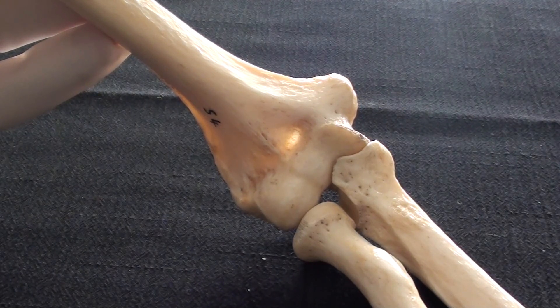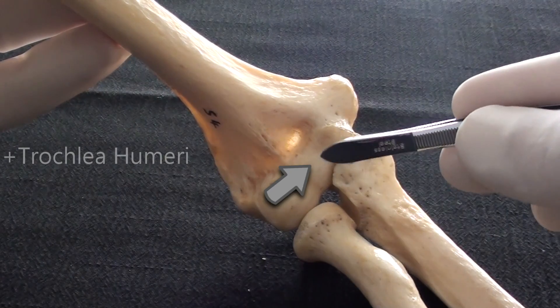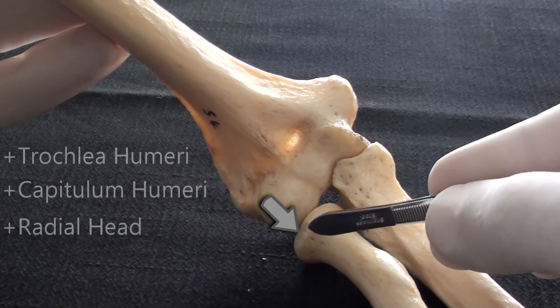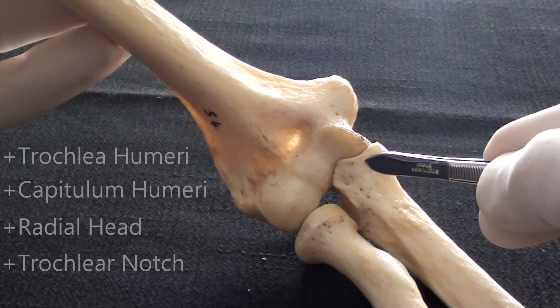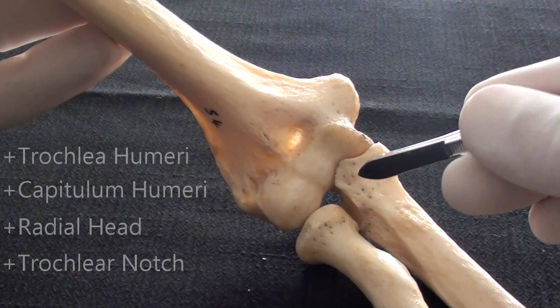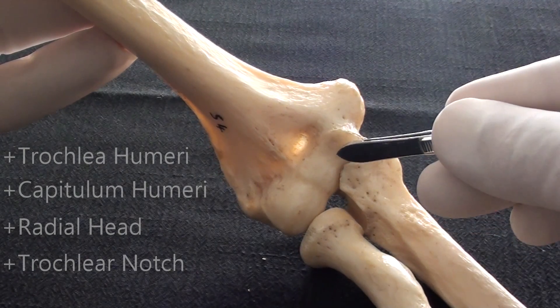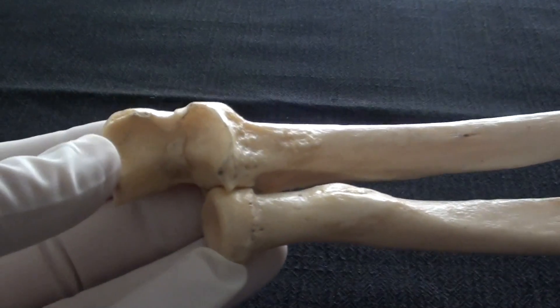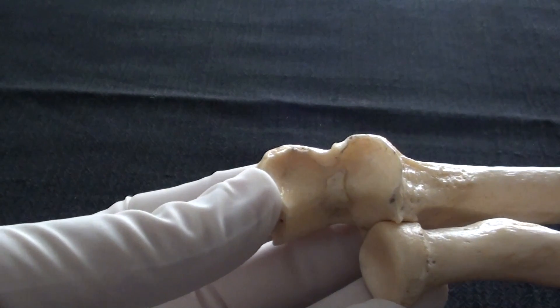Proximal radius and ulna together with distal humerus. Trochlear humeri, capitulum humeri, radial head and trochlear notch. However, because of the humerus, we are unable to see the notch, we're only able to see the coronoid process as the trochlear itself got deeply engaged within the trochlear notch. To complete the presentation of radius and ulna, one will have to illustrate them together.